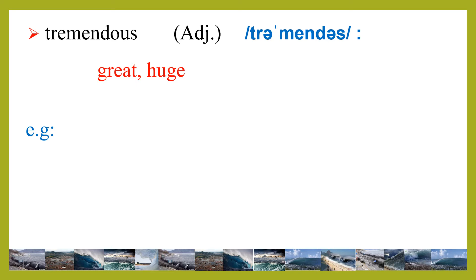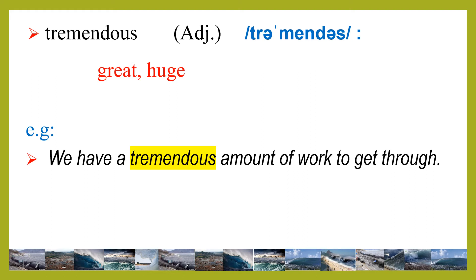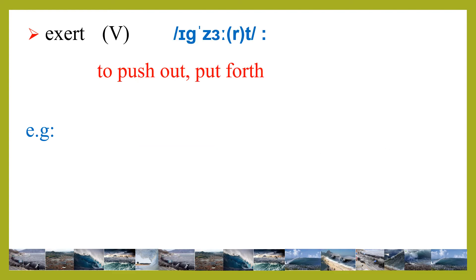Let's discuss the vocabularies word by word. The first word: tremendous. Tremendous — adjective. Tremendous means great, huge. In Bahasa Indonesia we say sangat besar, sangat banyak. See the example in this sentence: We have a tremendous amount of work to get through.